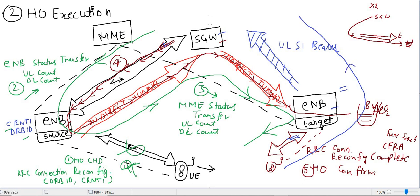SGW further forwards those uplink packets to PGW. This is the handover execution phase — the flow and path of downlink and uplink packets. In the next lecture, we will see the handover completion part. Thank you.